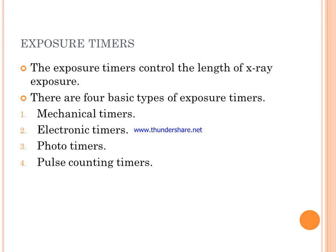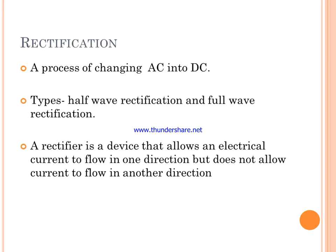If the mA meter is connected to the center point of the coil, it may be placed at the control panel without risk to the operator. The exposure timer controls the length of X-ray exposure. Basic types include mechanical, electronic, photo timer, and pulse counting timer. Rectification is the process of changing AC into DC — alternating current into direct current.